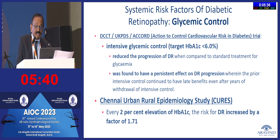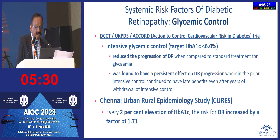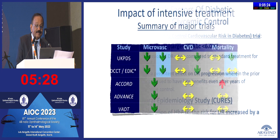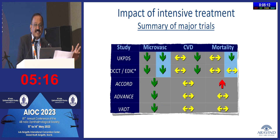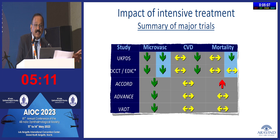The Chennai Urban Rural Study done by the Madras Diabetes Research Foundation showed that every 2% elevation in HbA1c increases the risk of diabetic retinopathy by a factor of 1.71. Multiple clinical trials have confirmed that microvascular changes — in the eye and in the kidneys — are markedly reduced with good glycemic control, with a moderate role also for macrovascular changes.